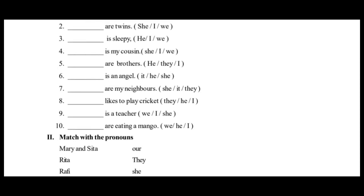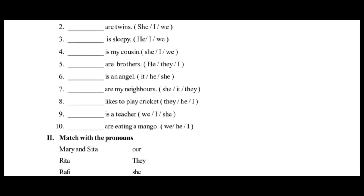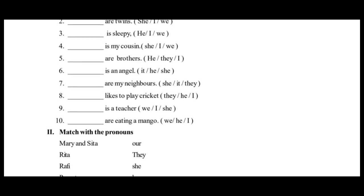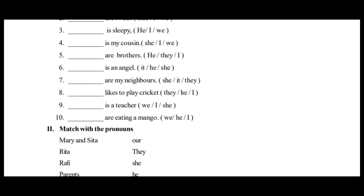Fifth one: 'Dash are brothers.' He is singular — wrong. But they is a plural pronoun, so the right answer is they. They are brothers. Sixth one: 'Dash is an angel.' The pronoun 'it' is usually used for things. Here we are talking about a person — feminine gender. So he is also wrong. The right answer is she is an angel.